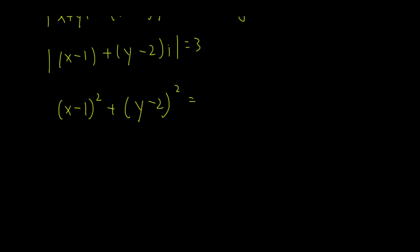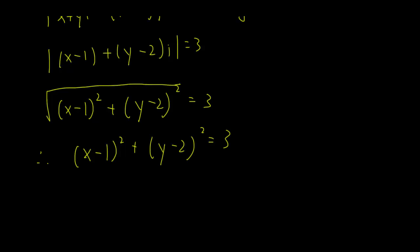So x minus 1 squared plus y minus 2 squared equals 3. From here we can plot the geometric interpretation on an Argand diagram with the real axis and imaginary axis. Actually, I made a mistake — that should be a 9, so r squared equals 9.